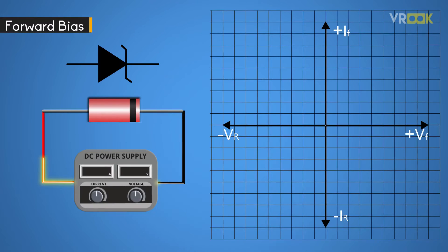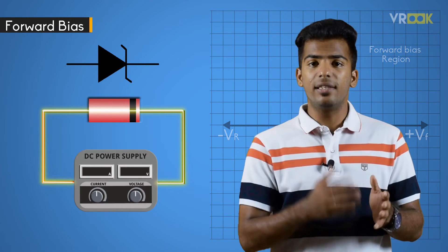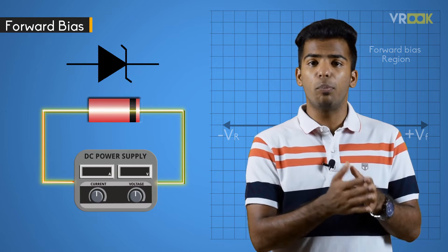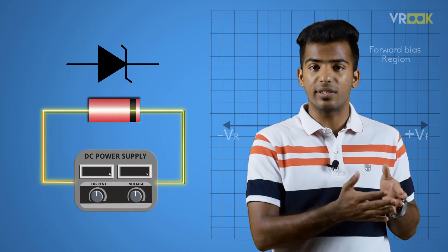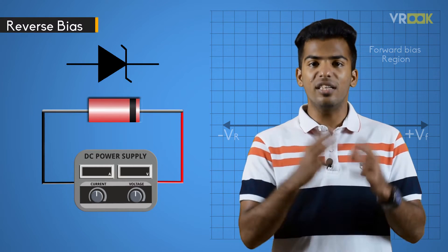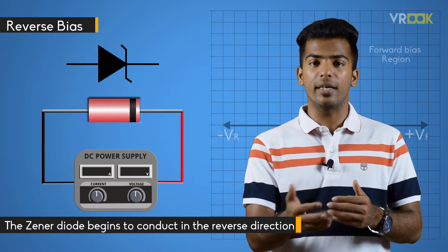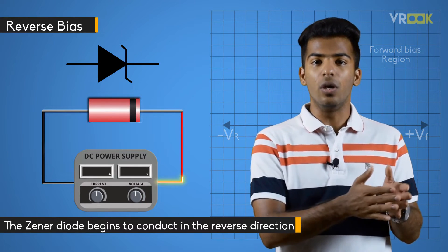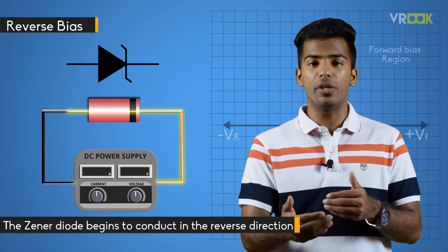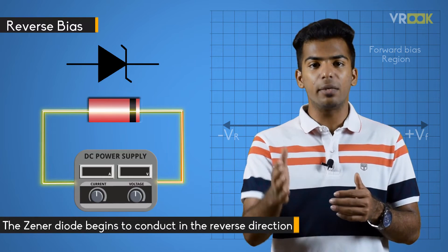When biased in the forward direction, it behaves just like a normal diode passing the current. However, unlike a conventional diode that blocks any flow of current through itself when reverse biased, the Zener diode begins to conduct in the reverse direction too as soon as the reverse voltage reaches a predetermined value.